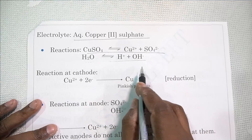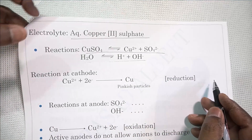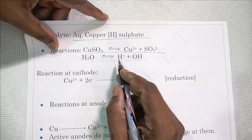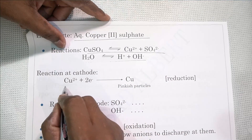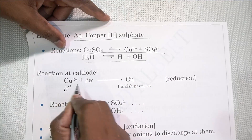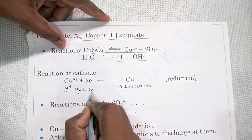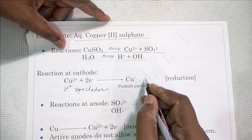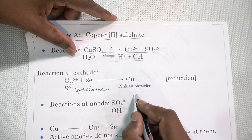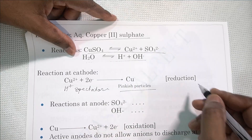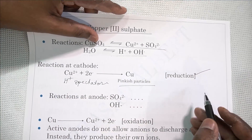The reaction taking place at the cathode: the ions migrating to the cathode are H⁺ ions and Cu²⁺ ions. The H⁺ ion is a spectator here — it does not get discharged. The copper ions take two electrons and discharge to give pinkish particles of copper. This is a reduction reaction because of the gain of electrons.